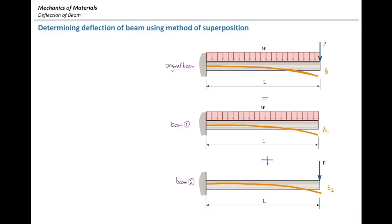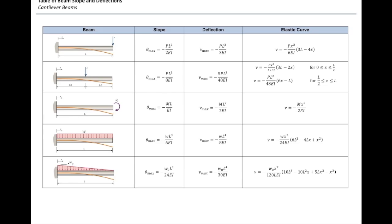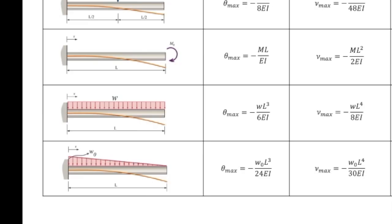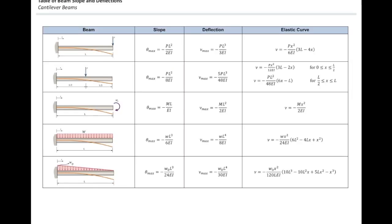Let's focus on beam number one. If I go to table, what case is equivalent to that? The fourth case from top. So, which column should I use? We have theta max, delta max, and elastic curve.